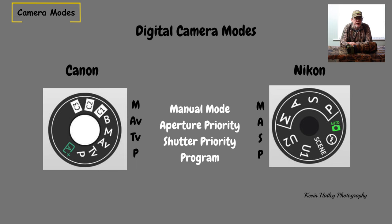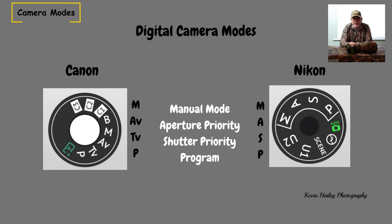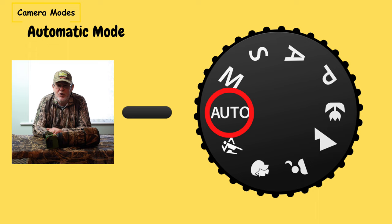Next we're going to look at camera modes, which are designed to be used in different situations to control your exposure. The dial for the camera mode is situated normally on the top of your camera, so depending on what make you've got will depend on where that dial is situated. On automatic mode you have absolutely no control whatsoever over your exposure settings — the camera sets everything: the aperture, the shutter, the ISO. You have no control over it, and that's not good for wildlife photography. You need control.